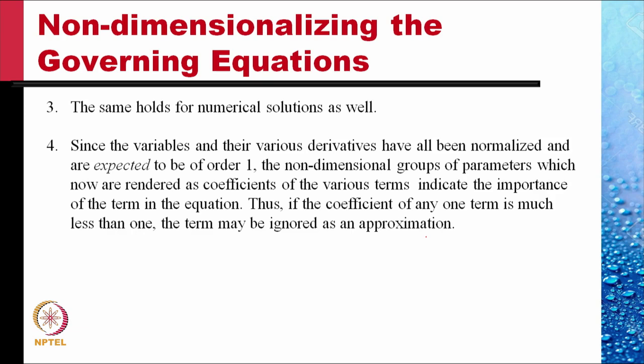Since the variables and their various derivatives have all been normalized and are expected to be of order one, the non-dimensional groups of parameters — now rendered as coefficients of the various terms — indicate the importance of each term in the equation. Thus, if the coefficient of any one term is much less than one, that term may be ignored as an approximation. Consideration of this point forms the bulk of the second part of this course: the theory of approximations.